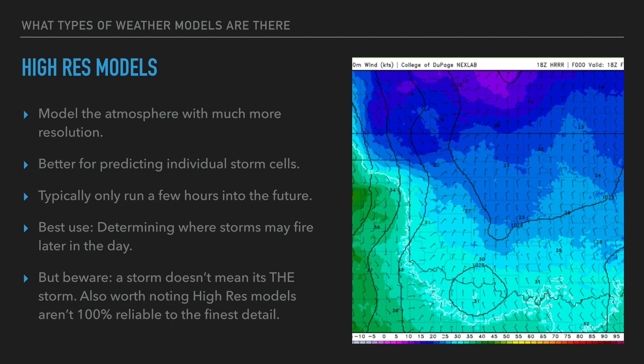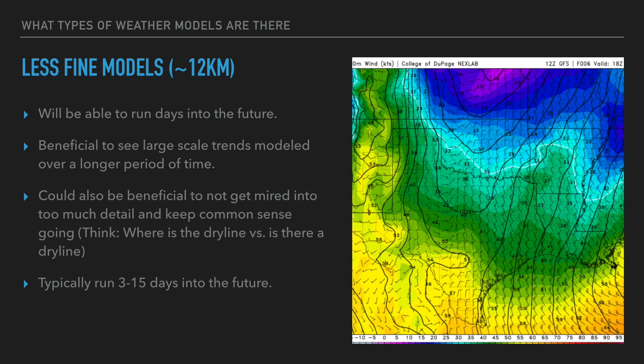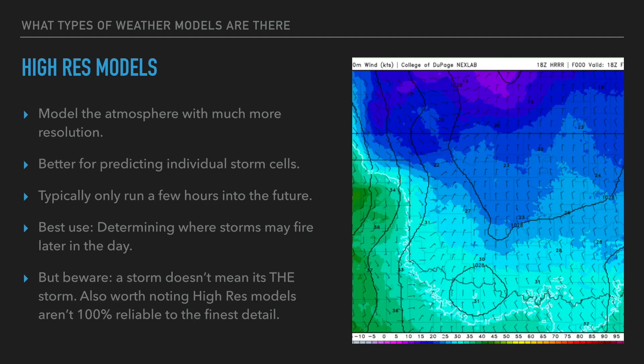High-res models have a lot more detail. Looking at that image on the right — see how much more detail there is on the temperature map. These images are taken at the same time; they look similar but there's a lot more detail down to three kilometers or one kilometer. High-res models are better for predicting individual storm cells for storm chasing — like 'there's going to be a storm forming in Woods County later today, and the HRRR has been showing it for six runs.' A high-res model is really going to nail that a lot better than lower-res models.